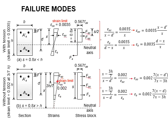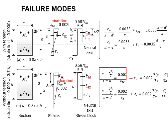The ratio of the strength limit 0.002 is in respect to this height, which is obtained by subtracting 3H/7 from x, as shown here.